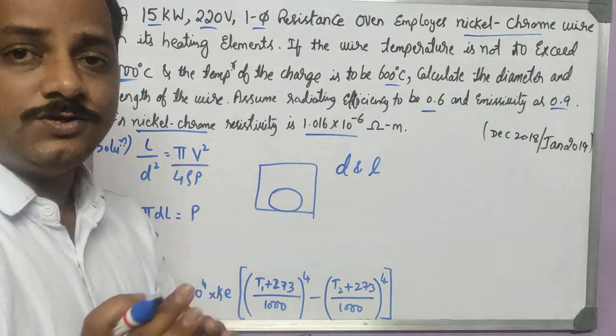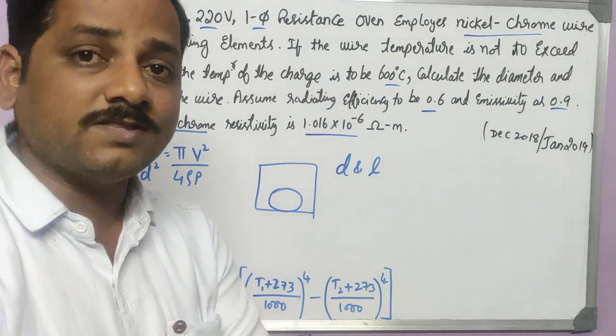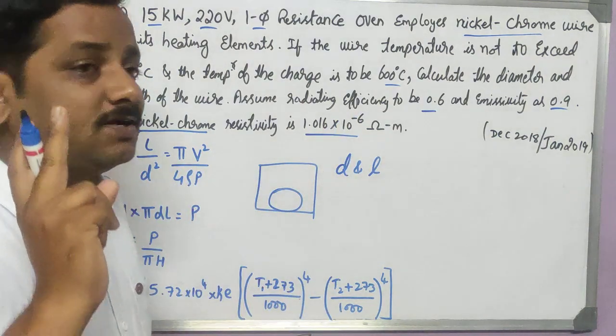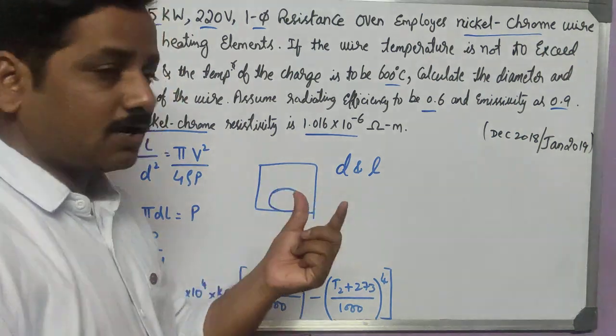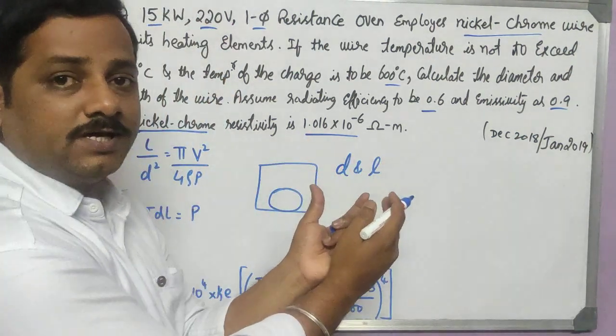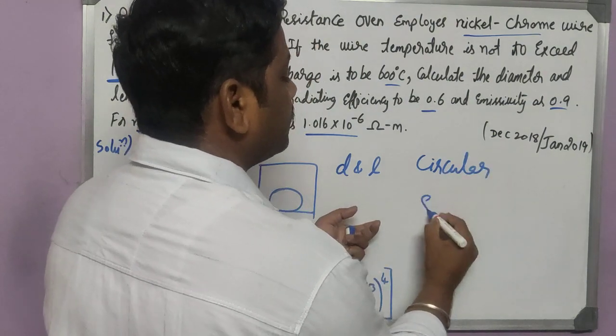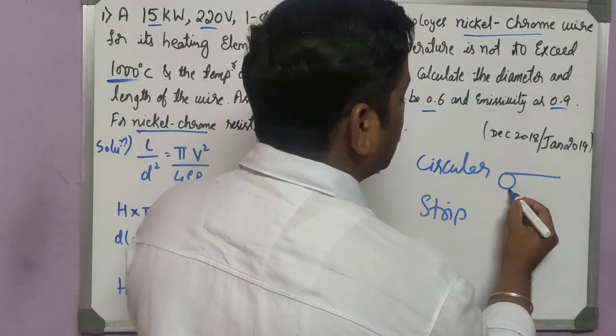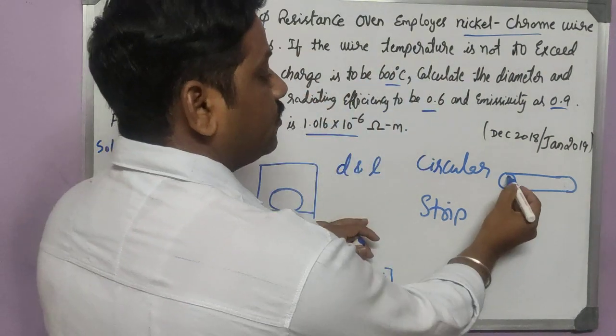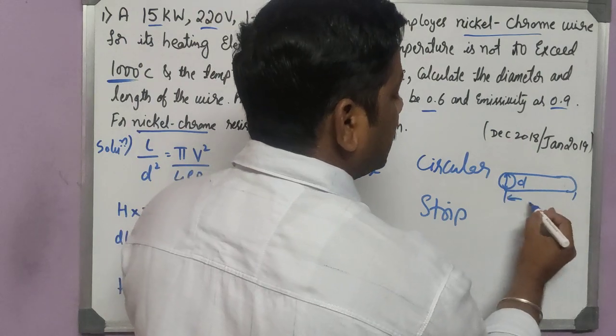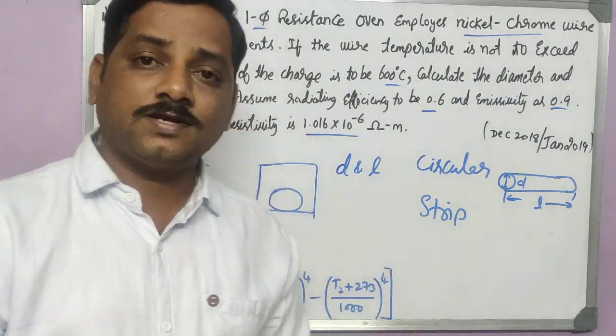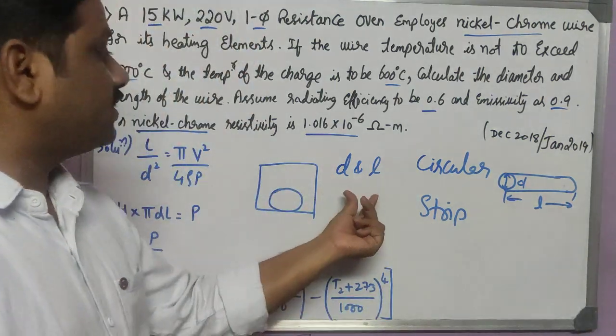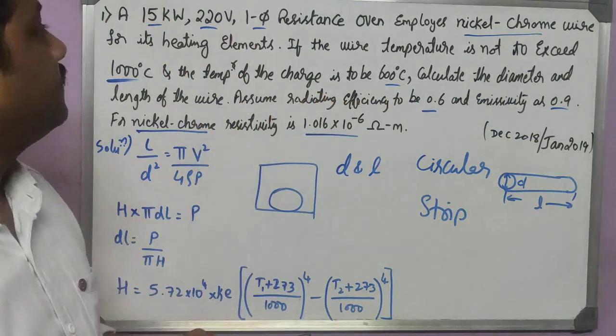Let me tell you some simple concepts here. We have a derivation that has been already done. You can go to my previous videos. There are two types of design we actually get in the oven. The coil which we use, the nichrome wire, may be in the form of a circular shape or in the form of strips or rectangular shape. For circular shape, the coil will have a diameter and also length.